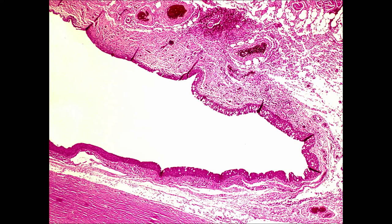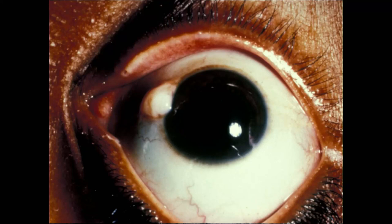Not really part of the conjunctiva, but you get a layer right next to the sclera anteriorly called Tenon's capsule. Tenon's is important because when you're removing a pterygium, the disease is below the epithelium — so you don't want to remove a huge chunk of epithelium, but you do want to remove some of the underlying Tenon's capsule.